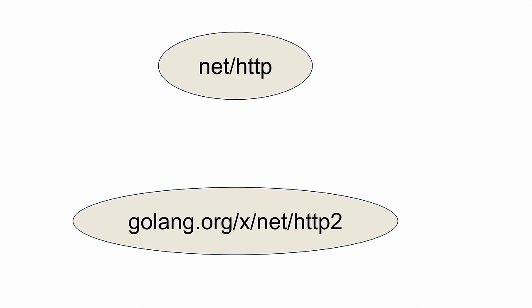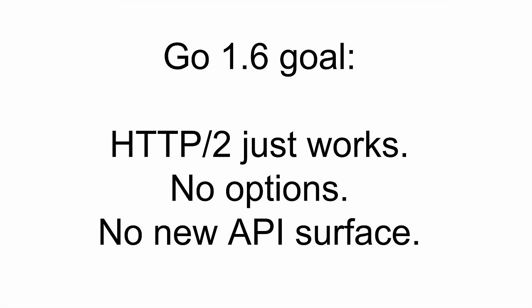We have two packages: the net/http package, which is what everyone knows — how you make requests, GET requests, run a server — and then the HTTP2 package with all the low-level stuff used by things like gRPC. But our goal for Go 1.6 is that HTTP2 just works — no options, no new API surface. We want it to be completely transparent.